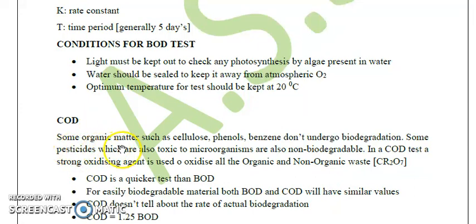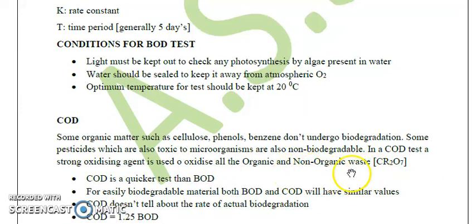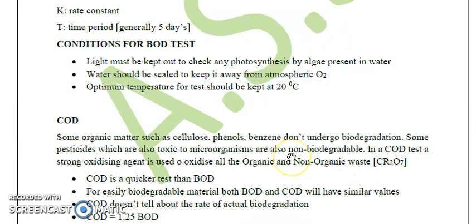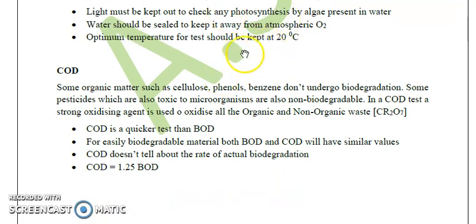In a COD test, we add a strong oxidizing agent which is used to oxidize all organics — both biodegradable as well as non-biodegradable substances — rather than relying on microorganisms to do that job. So instead of relying on microbes to degrade substances, we add a chemical that degrades both biodegradable and non-biodegradable substances. COD is a much quicker test than BOD.